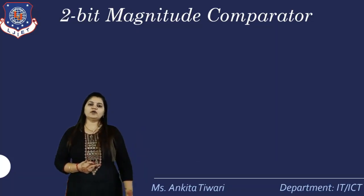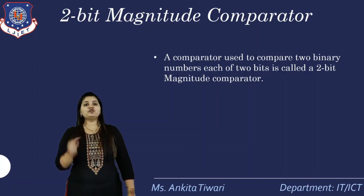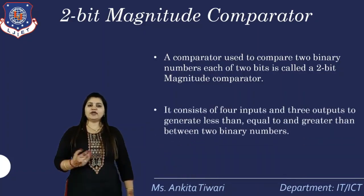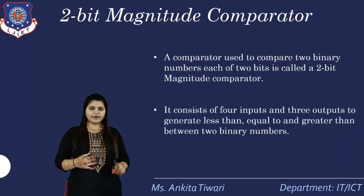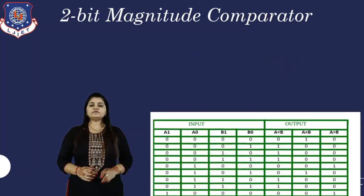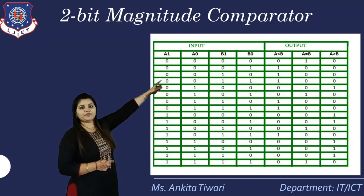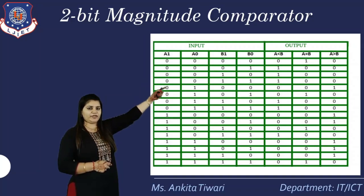After one-bit, we move to the two-bit magnitude comparator. A comparator used to compare two binary numbers each of two bits is called a two-bit magnitude comparator. It consists of four inputs — a1, a0, b1, b0 — because each variable is two bits wide, and three outputs: less than, equal to, and greater than. The truth table has inputs a0, a1, b0, b1 with outputs in three variable form: a less than b, a greater than b, and a equal to b.